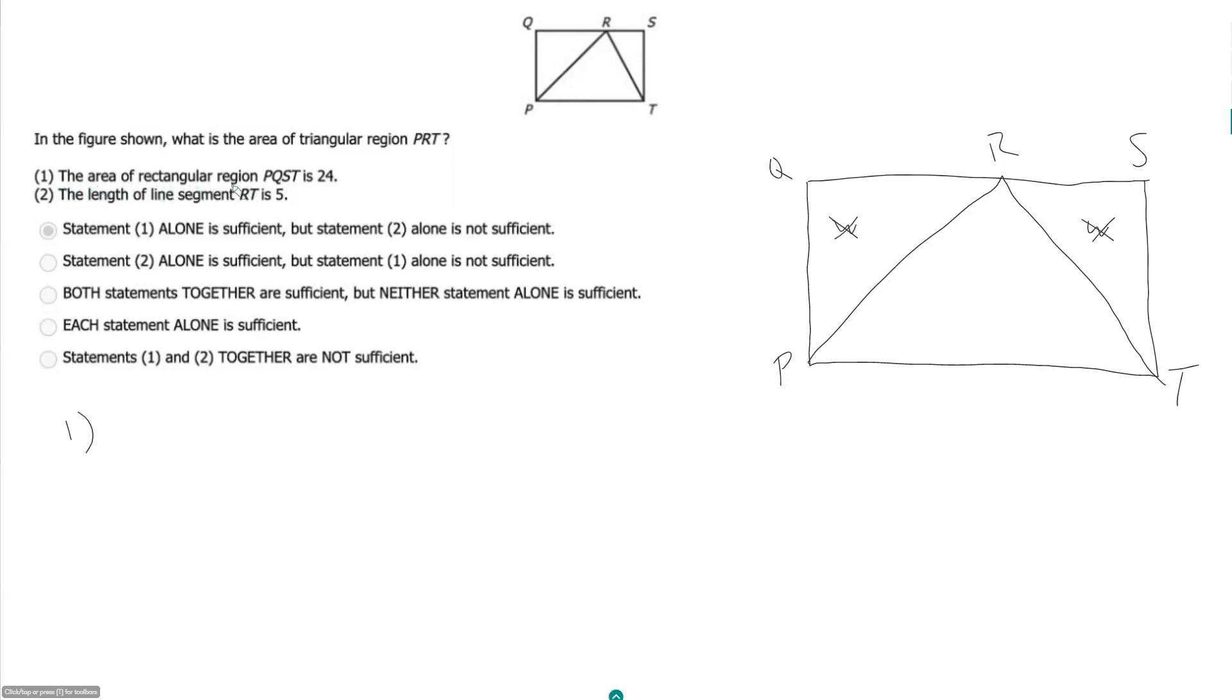The area of rectangular region PQST is 24. So this means our length times our width is equal to 24.